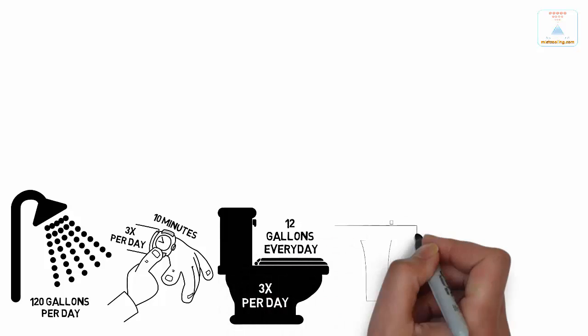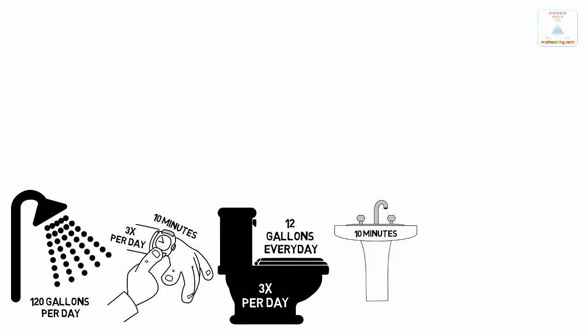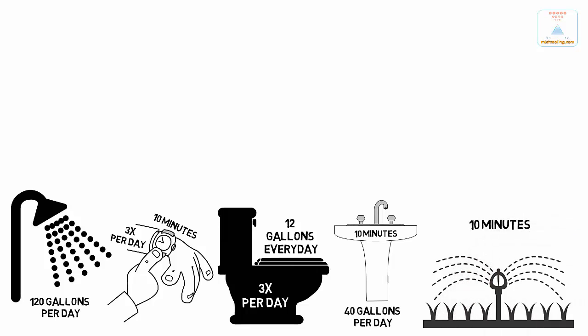If your sink faucet runs approximately 10 minutes a day, 40 gallons per day is consumed, and your lawn watering running for 10 minutes sprays almost 66 gallons of water.